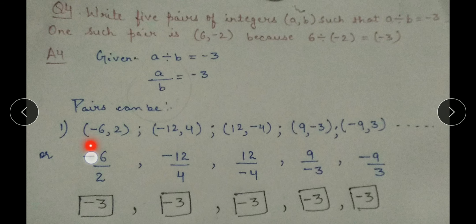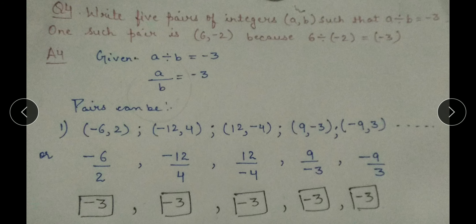To find more pairs, note that a upon b equals minus 3. The first new pair is (minus 6, 2): minus 6 divided by 2 equals minus 3. The second pair is (6, minus 2) — or equivalently, you can take 4 as the second integer: 4 times 3 is 12, giving pairs (minus 12, 4) and (12, minus 4). Minus 12 divided by 4 equals minus 3, and 12 divided by minus 4 also equals minus 3.